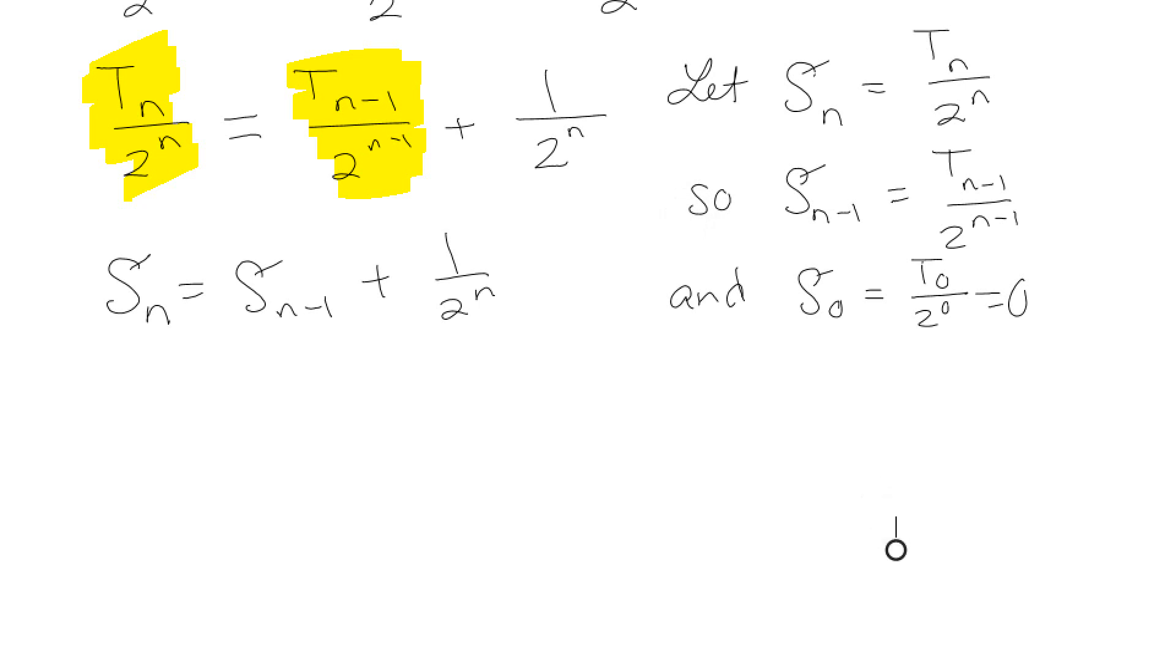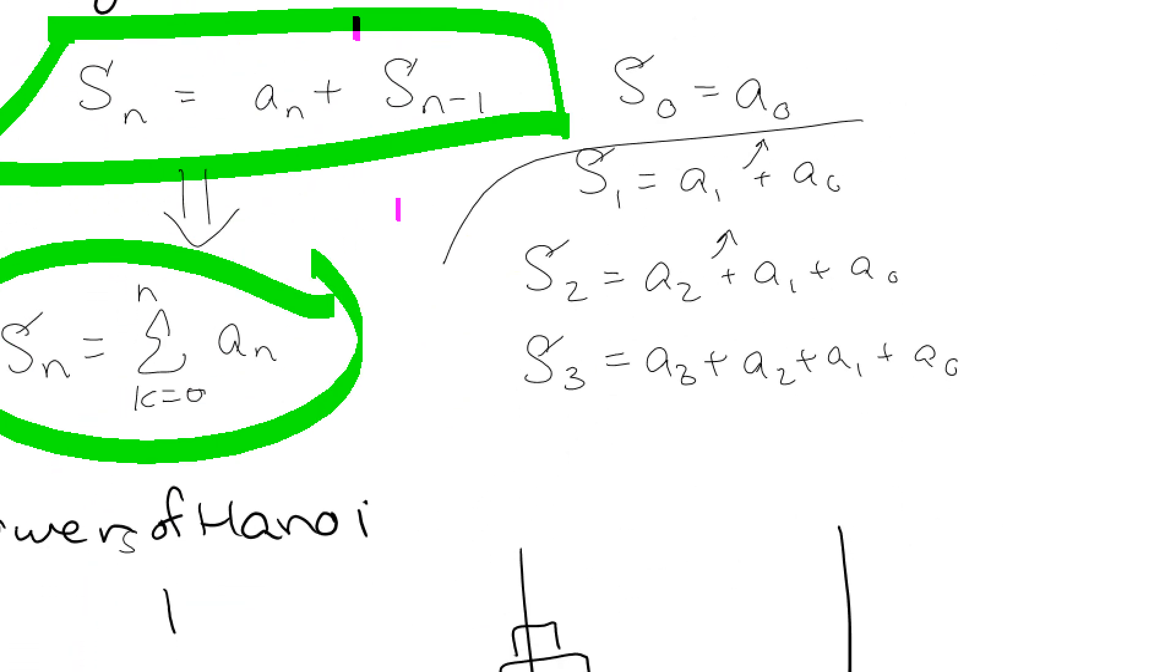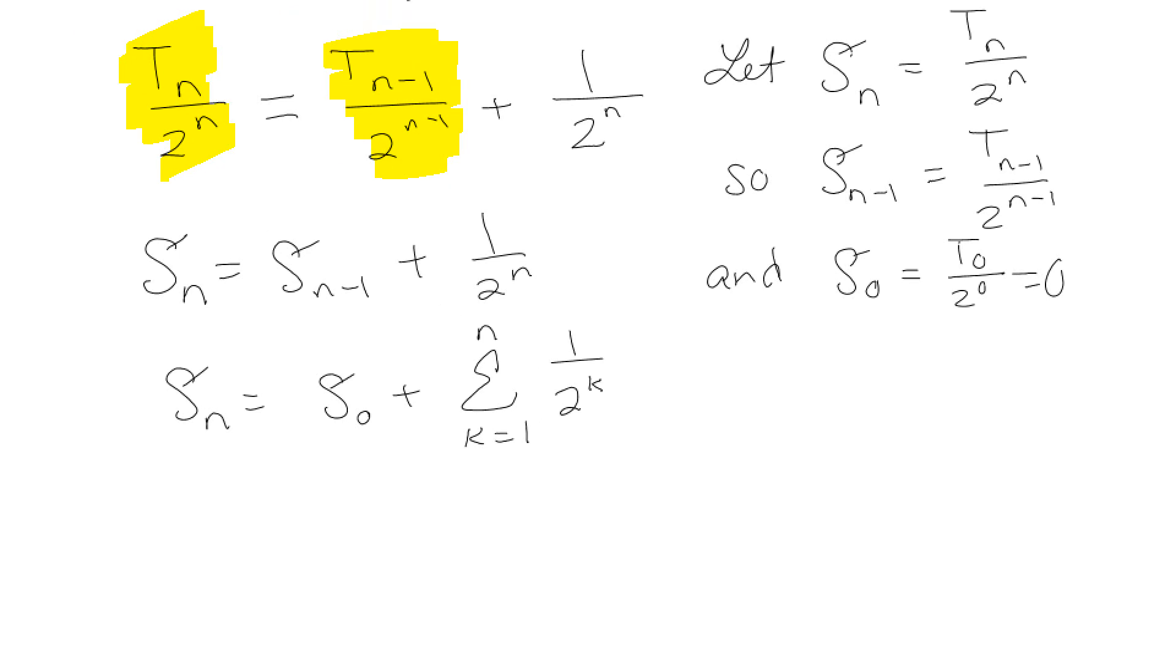Okay, so basically now what we have is that thing that is essentially a summation. So now what we're going to do is we're going to go ahead and write S_n is equal to S_0 plus the summation from k going from 1 to n. And we're starting at 1 because in recursion, that first term is always kind of something special. And then 1 over 2^k. Now we already have some of this, right? So we know that S_0 is 0, and summation from 1 to n, 1 over 2^k.